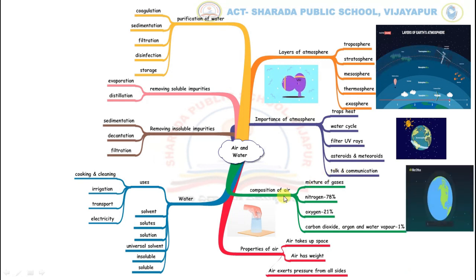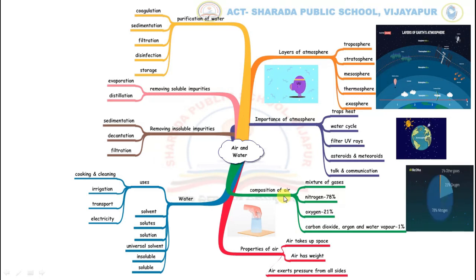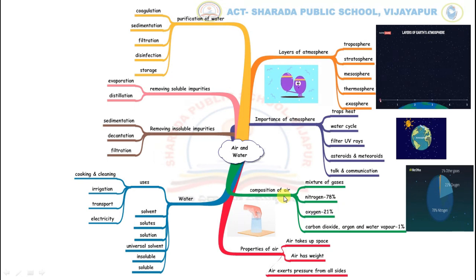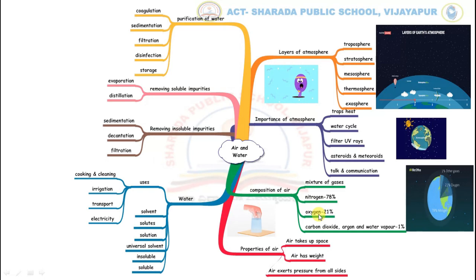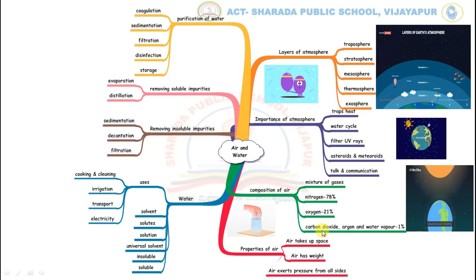The next branch deals with the composition of air, or what air is made up of. Air is a mixture of gases. It constitutes about 78% nitrogen and 21% oxygen. The remaining 1% consists of other gases such as carbon dioxide, argon and water vapor.